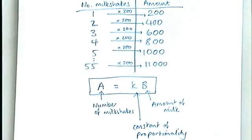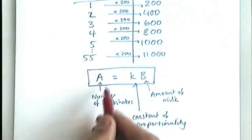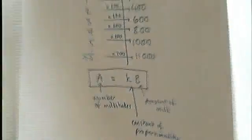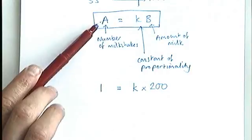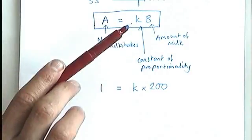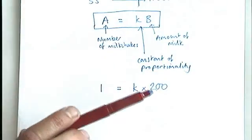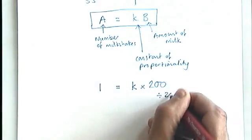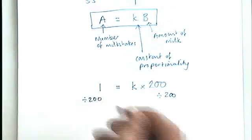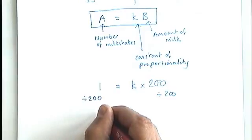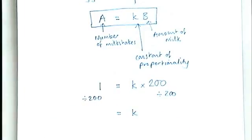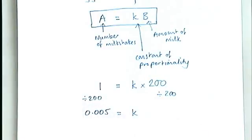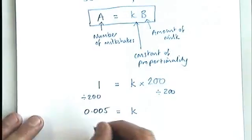So let's have a look at our algebraic rule here. We could say that, let's take one particular pair of numbers. So we know that one milkshake is made using 200 milliliters of milk. So if I just write that down there, what I've done is I have substituted 1 for the number of milkshakes. K is the constant of proportionality I'm going to work out, and B, the amount of milk, was 200. So I've substituted that into my formula as well. And then if I divide by 200 both sides of this equation, I will get K on its own there, and I will get 1 divided by 200 in this column here. 1 divided by 200, you could write it as a fraction. I'm going to write it as a decimal like that.